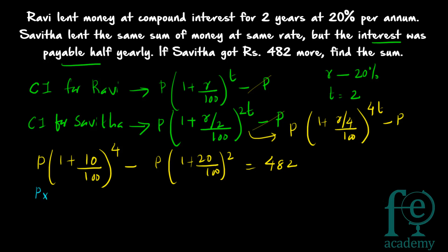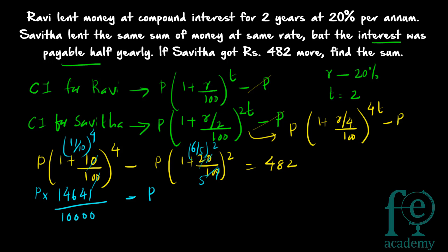So you get P × (110/100)^4 − P × (120/100)^2 = 482. You can cancel 10 and 100, giving 11/10 raised to 4. Now, 11^2 = 121, 11^3 = 1331, and 11^4 = 1331 × 11 = 14641, divided by 10^4 which gives 14641/10000. For Devi's term: 20/100 = 1/5, so 1 + 1/5 = 6/5, and (6/5)^2 = 36/25. So the equation becomes P × (14641/10000 − 36/25) = 482.